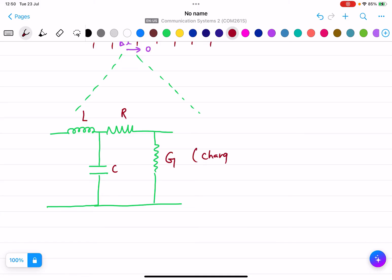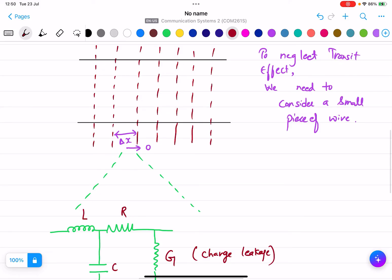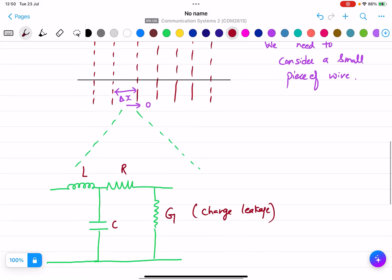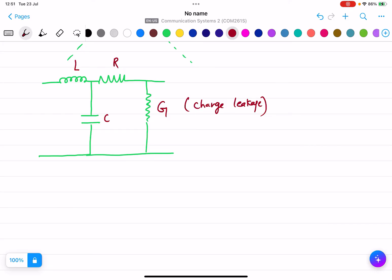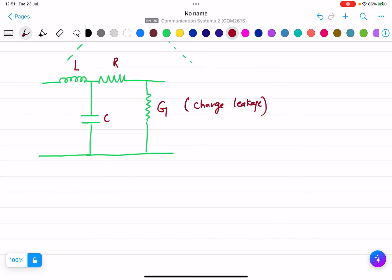Conductance occurs due to charge leakage. Any wire will have resistance and inductance. And if we're considering a small piece like this, it basically acts as two metal plates - a perfect capacitor, a parallel plate capacitor.